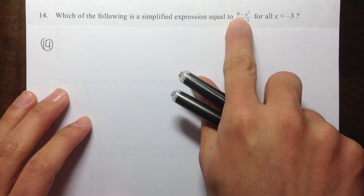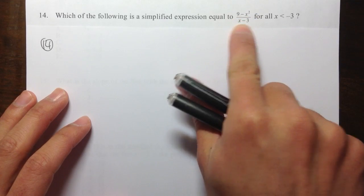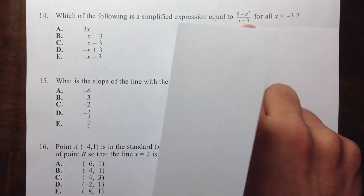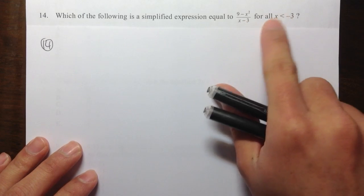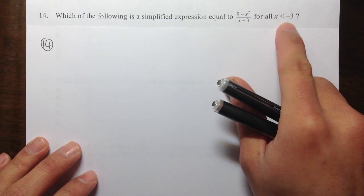Question 14. I have 9 minus x squared over x minus 3. I need to see which of the following is the same as that, but it says for all x less than negative 3.